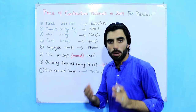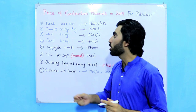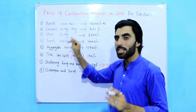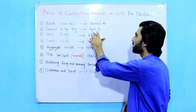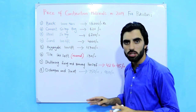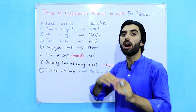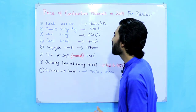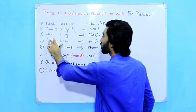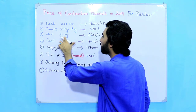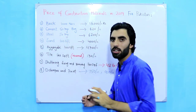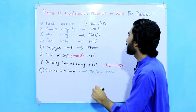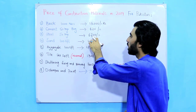The second material is cement. One bag of cement, which is 50 kg, is priced at 620 rupees — though this may go up or down on some days. For steel, one mound (50 kg) is 6,200 rupees at the current rate.